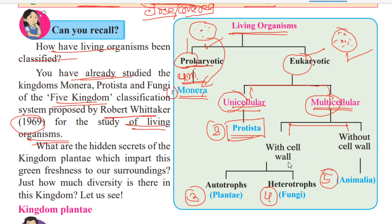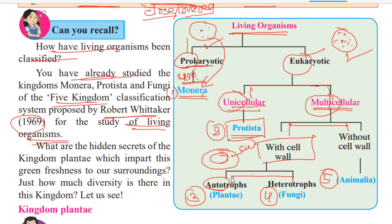With cell wall means the cell has a covering called a cell wall, generally present in plant cells. These are further divided into autotrophs and heterotrophs. Autotrophs make their own food and do not depend on others — these are the plants, included in Kingdom Plantae. Heterotrophs depend on other plants or animals for food and are included in a different kingdom.